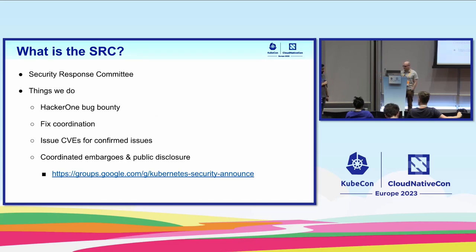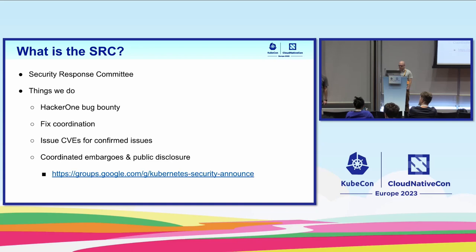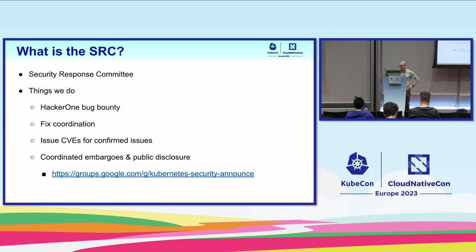So what does the SRC do? We run the HackerOne bug bounty — if you're a security researcher, we're happy to pay you if you tell us where we screwed up. A large part of our work is coordinating with various code owners to get fixes out. We spend a lot of effort asking sig leads: is this an issue, is this how it's supposed to work, is this a doc fix, how severe is it, who does it impact?